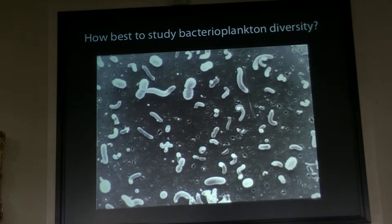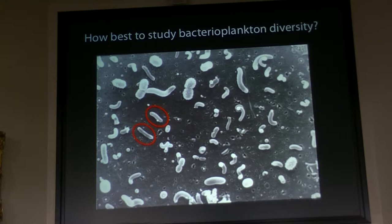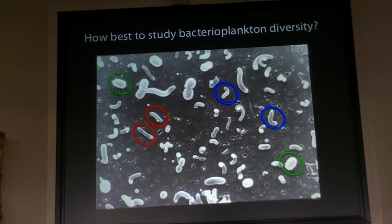How do we study bacterioplankton diversity? We can look at them under the microscope — this is an electron micrograph — and try to quantify the number of taxa. But the problem is that unlike plants and animals, bacteria have very little morphological variation, so you can't use morphology to characterize them. You can use biochemistry, but biochemical markers are often in disagreement with each other when you try to characterize phylogenetic structure in these communities.